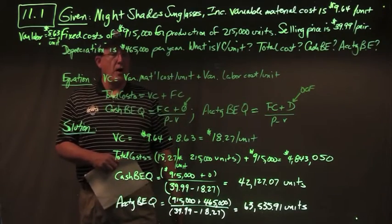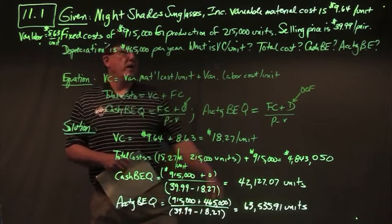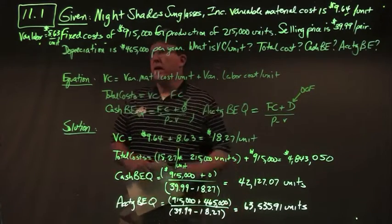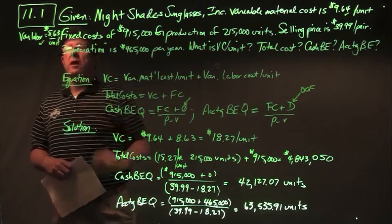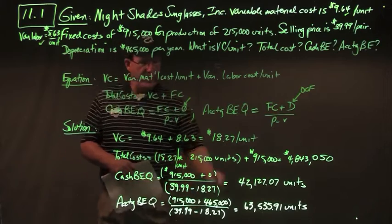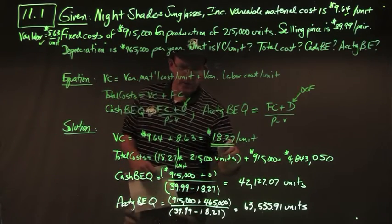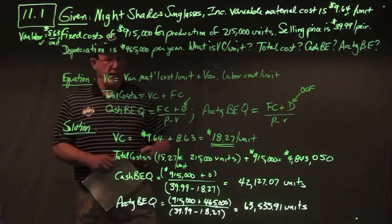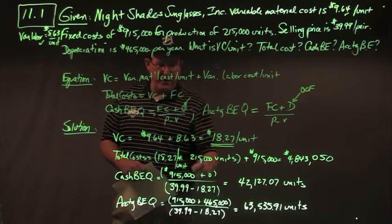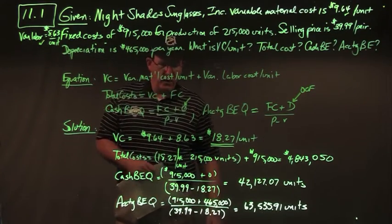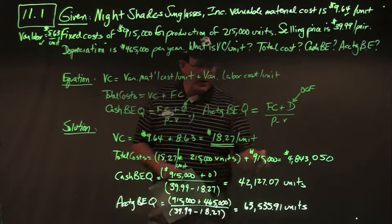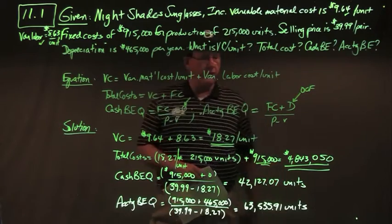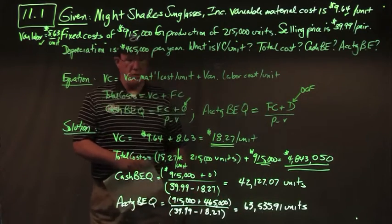First, we calculate variable cost: $9.64 per unit of material plus $8.63 per unit of labor equals $18.27 per unit. Total cost is variable cost times 215,000 units — giving total variable cost — plus fixed cost of $915,000, yielding total cost of $4,843,050.